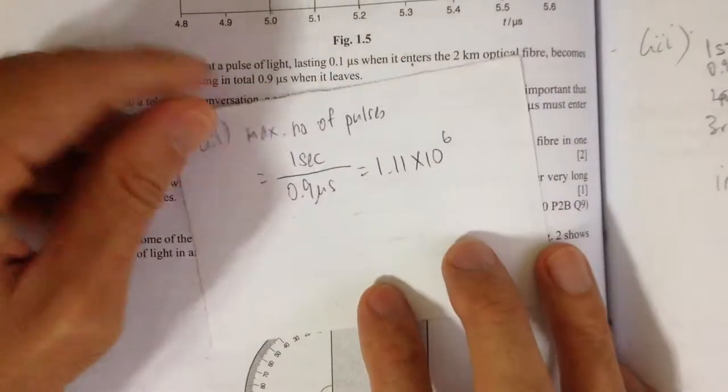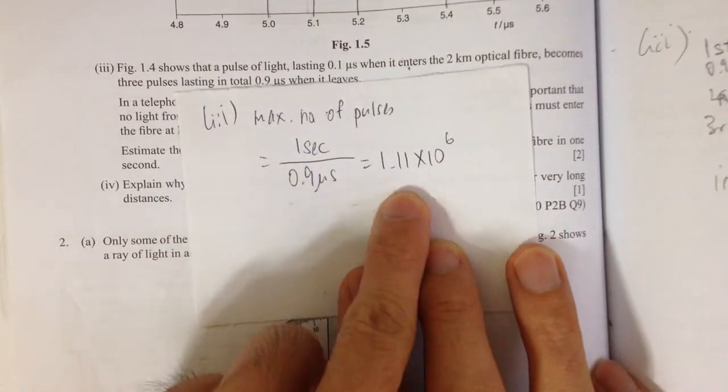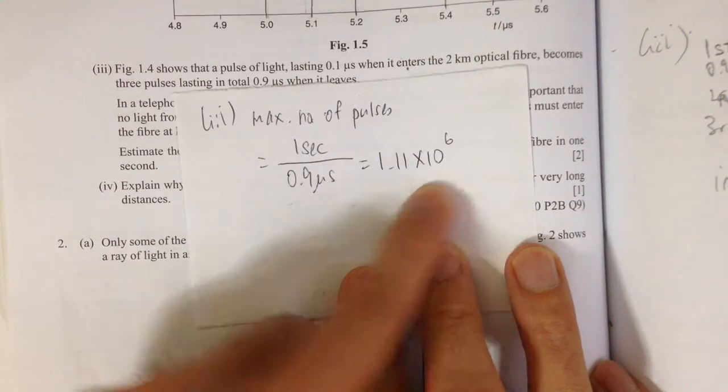So to calculate, it's that simple. It's just one second divided by 0.9 microseconds, which gives you 1.1 times 10 to the 6. So that's the answer.